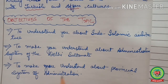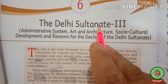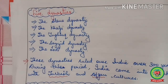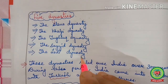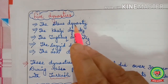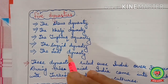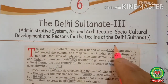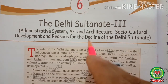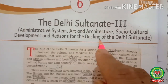To make you understand about the provincial system of administration. Let's come to the chapter — Delhi Sultanate Three. Students, in Lessons Four and Five, Delhi Sultanate One and Two, you have already learned about these five dynasties: Slave Dynasty, Khalji Dynasty, Tughlaq Dynasty, Sayyid Dynasty, and Lodi Dynasty. Right now in this chapter you are going to learn about the administrative system, the art and architecture, the social and cultural development, and the reason for the decline of the Delhi Sultanate.